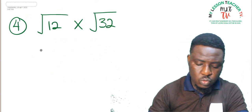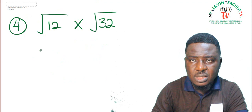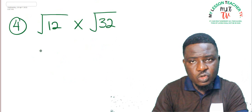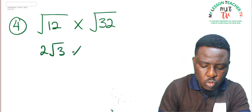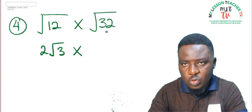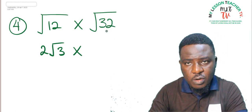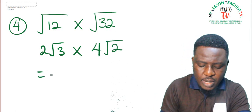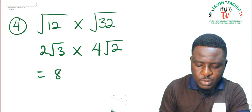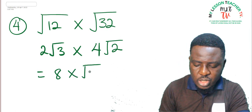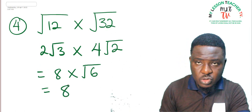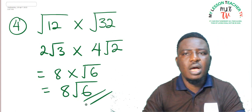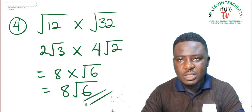Question 4: root 12 times root 32. Root 12 = 2 root 3, since 12 = 4 times 3 and root 4 = 2. Root 32 = 4 root 2, since 32 = 16 times 2. Multiplying: rational parts give 2 times 4 = 8; irrational parts give root 3 times root 2 = root 6. Root 6 is already in its simplest form, so the answer is 8 root 6.